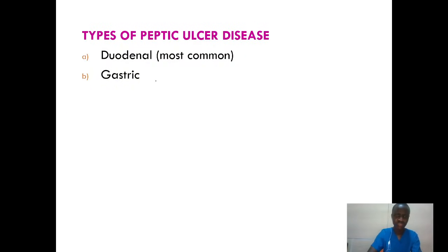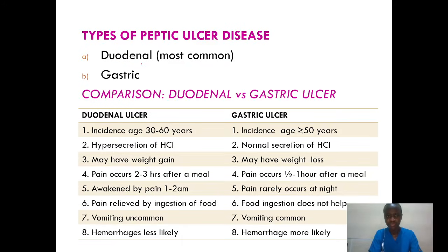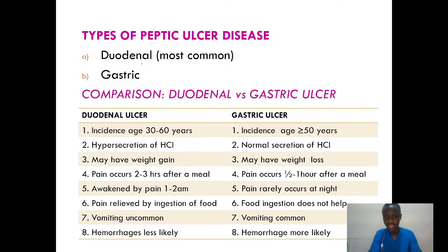What are the two types of peptic ulcer disease? Duodenal and gastric. Duodenal is the most common one. For a comparison: duodenal ulcer incidence — age is always between 30 to 60 years — but for gastric, it's always more than 50 years. So gastric ulcer mainly affects older individuals, while duodenal ulcer risk starts from age 30.